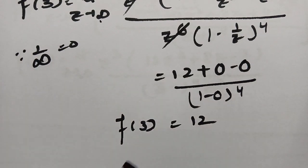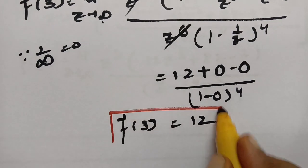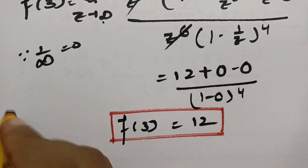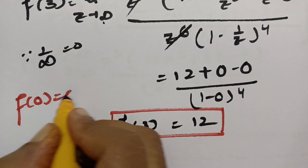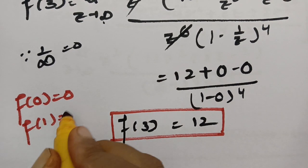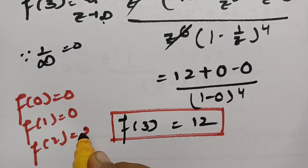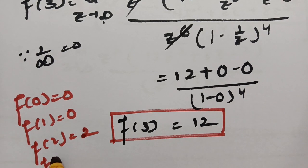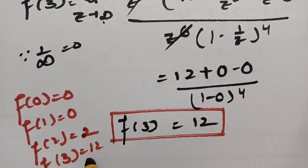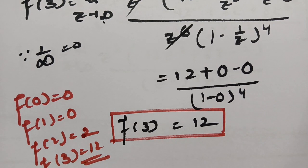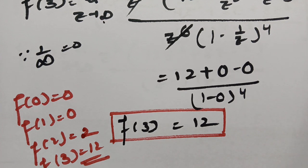Therefore f(3) = 12. To summarize: f(0) = 0, f(1) = 0, f(2) = 2, and f(3) = 12. This is how we solve these problems — if you follow these steps it is quite simple. Please watch the next video as well, which covers another important question. Please practice and pass it on.